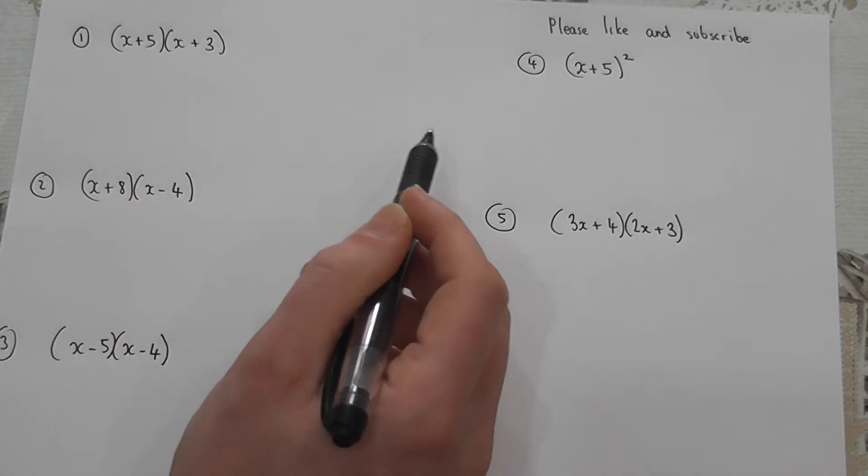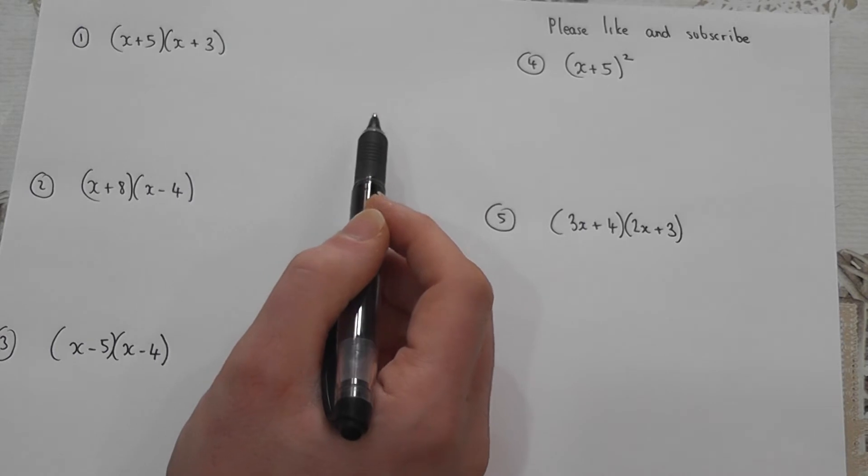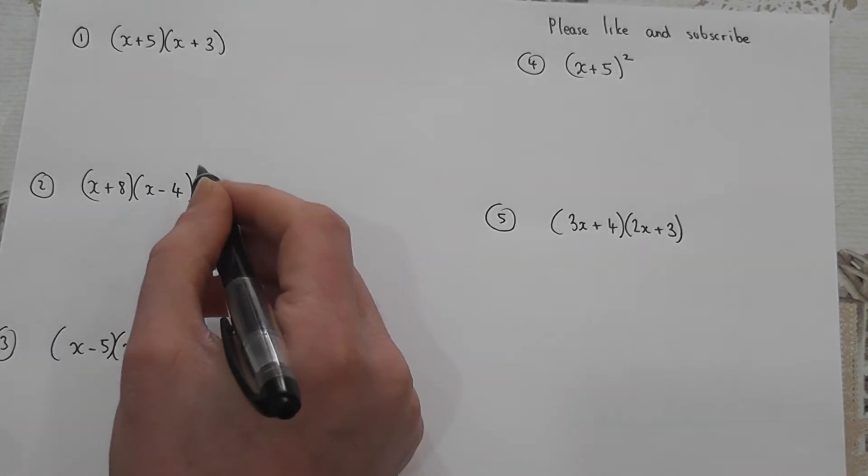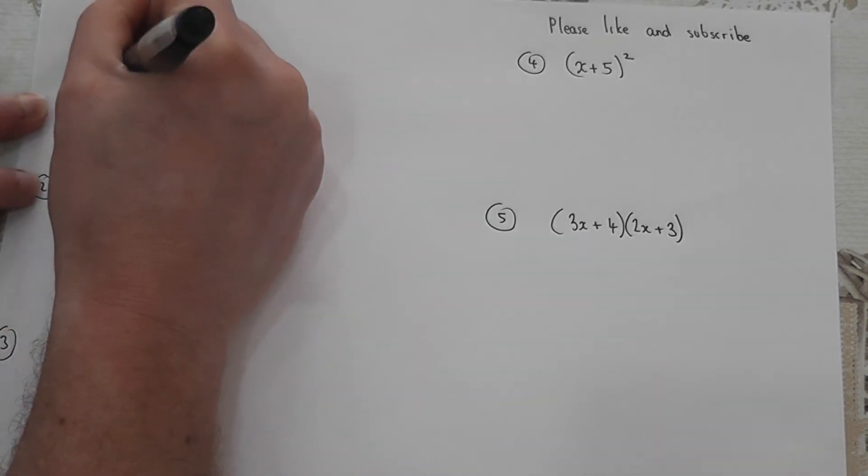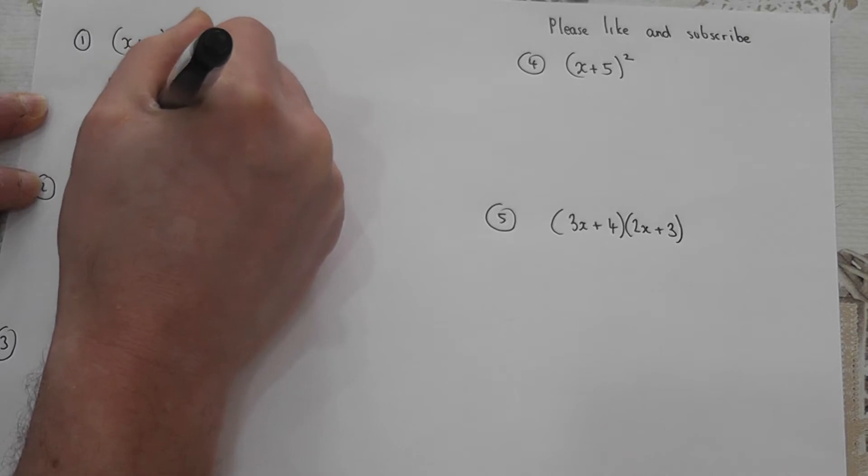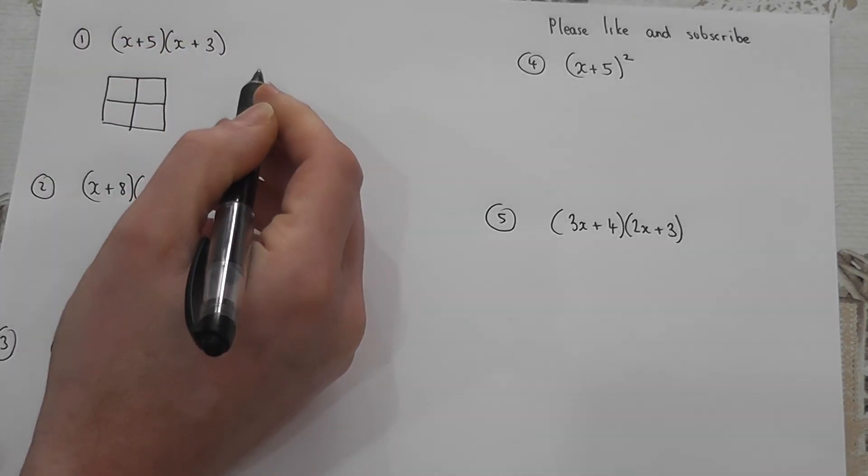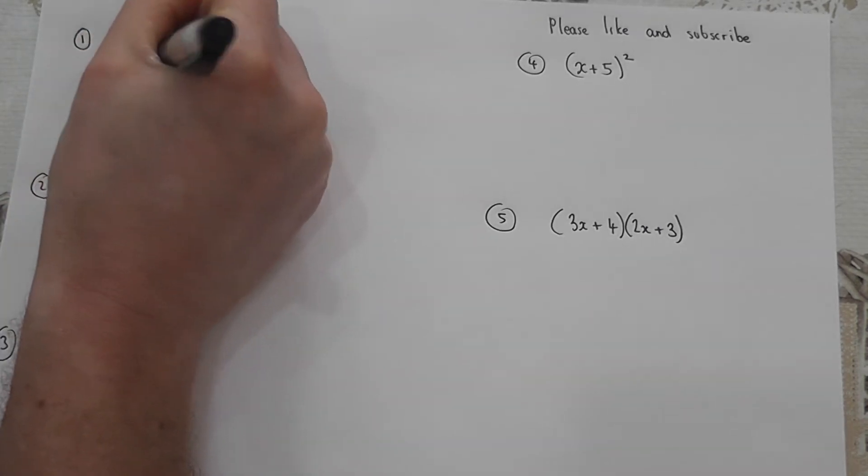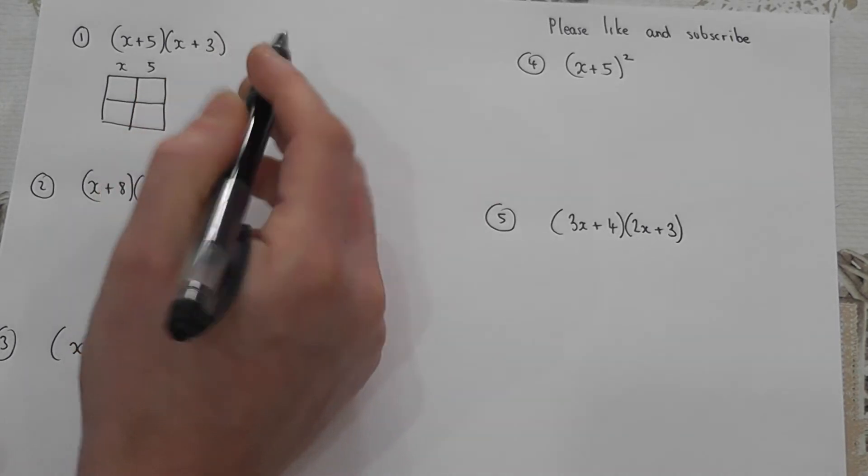So, double brackets. There are two ways to expand double brackets and the first way is called the grid method. I will then show you the shortcut way that will always work. So with the grid method we draw a two by two grid because there are two things in each of the brackets and the first one's x and a 5, the second bracket is an x and a 3.